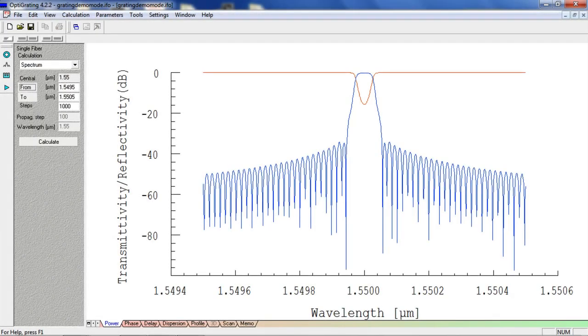OptiGrading is an implementation of the coupled mode theory of optical gratings. This is a powerful tool for the analysis of coupling and reflection among guided modes of optical waveguides and fibers.